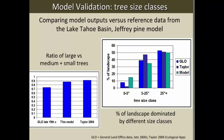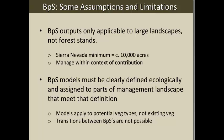Some important assumptions and limitations: BPS model outputs are only applicable to relatively large landscapes, not forest stands. In the Sierra Nevada, you can't talk about landscapes less than about 10,000 acres — this depends on fire regime, disturbance size, and similar factors. You also need to clearly define these things ecologically and assign them to the right parts of the management landscape, because these models apply to potential vegetation types, not existing vegetation. There are no transitions between BPSs, so if you apply a model to soil types or landscape areas where it doesn't fit, you'll get wrong answers.